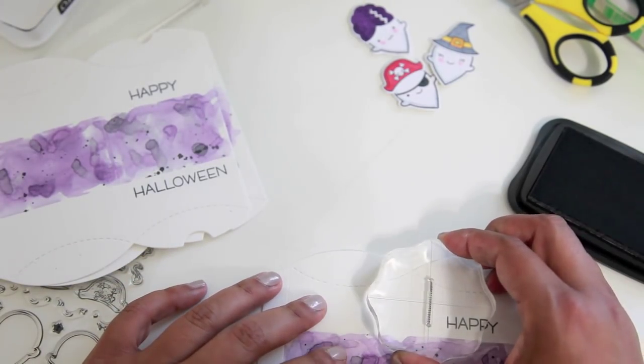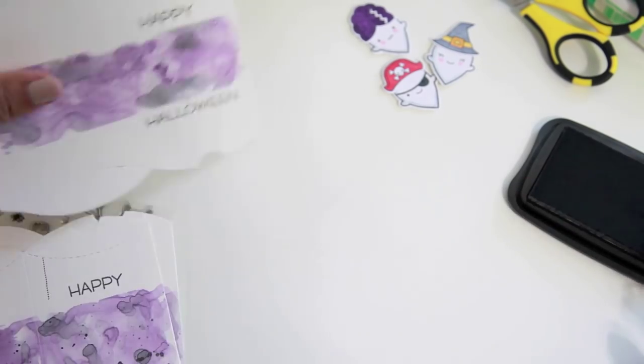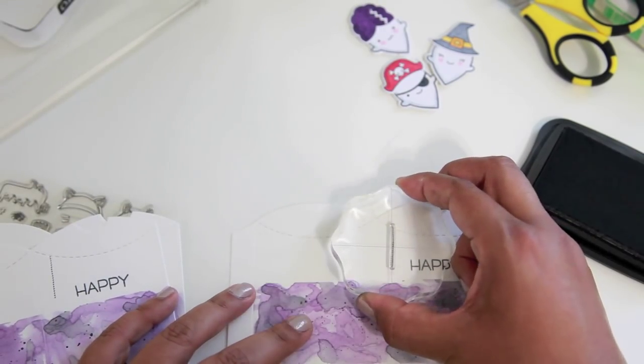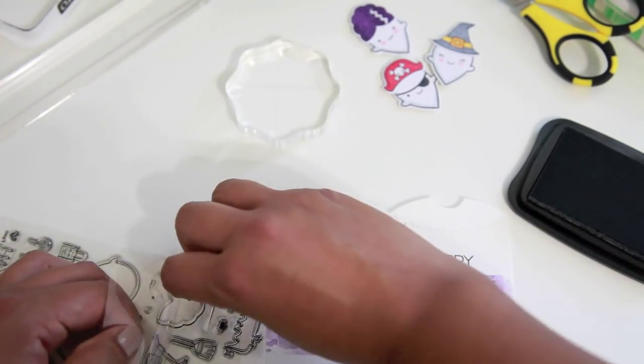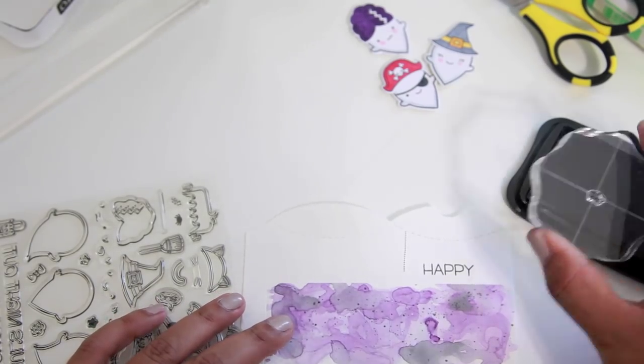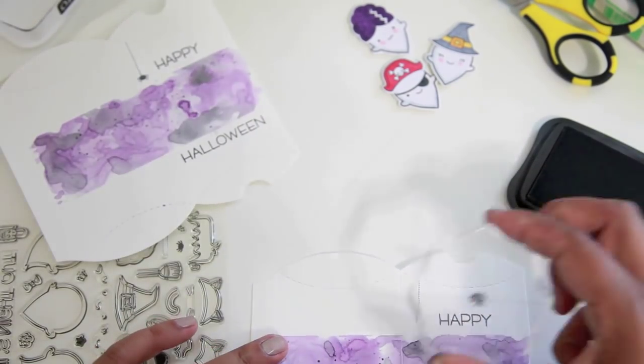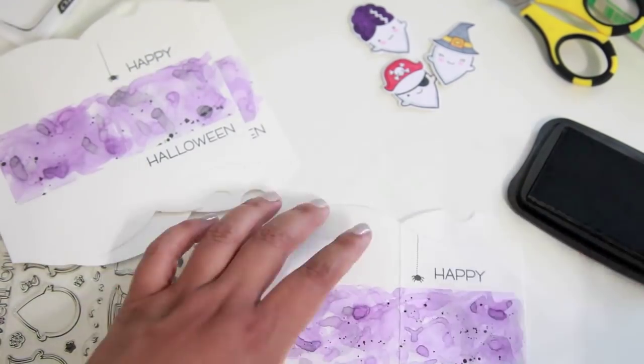Okay, so now I'm going to go ahead and add this little spider. So first I'm going to stamp out the little web part. And then I'm going to go back and stamp out the little spider image. That's like one of my favorite little accessories or elements that's included in this set. I think it's so cute. And I even used it on the Halloween card that I made. I just love it so much.